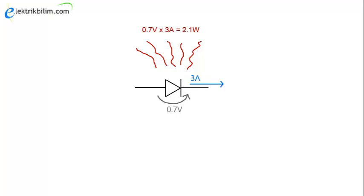But at 3 amps, you're generating 2.1 watts of heat, which is quite significant, so you'll either have to use a bigger diode, or use a diode with a lower forward voltage, like a Schottky diode. And I'll cover those in another video.